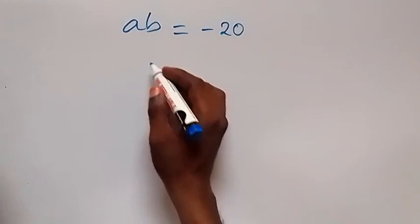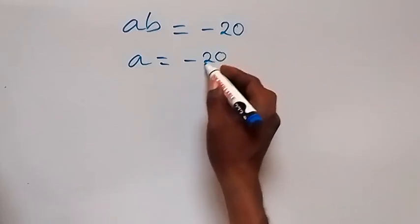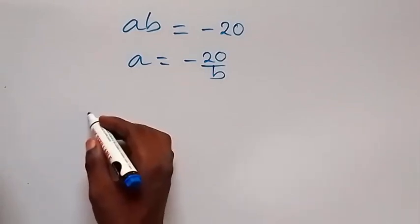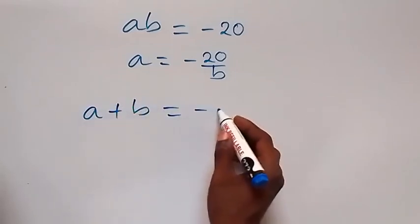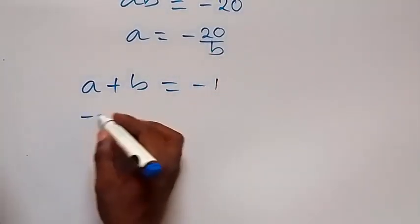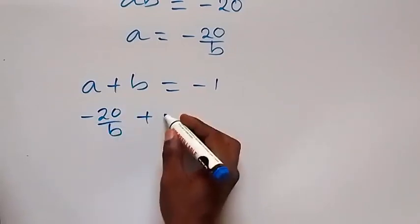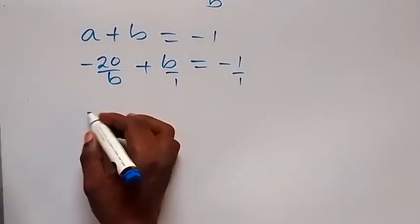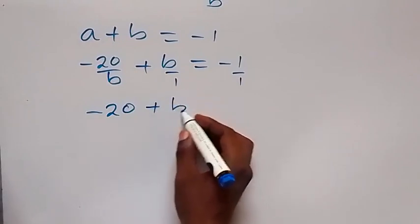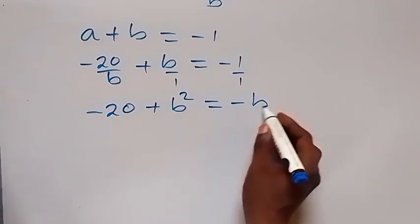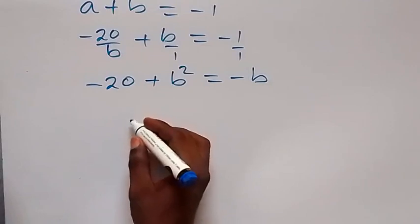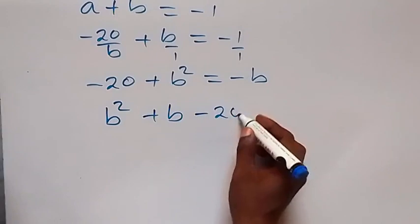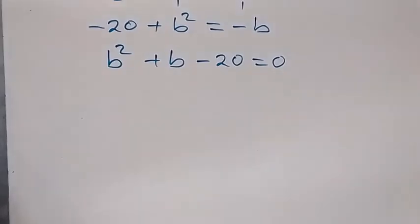We can make a the subject: divide both sides by b, so a equals minus 20 over b. Now substitute this into equation 3, which is a plus b equals minus 1. We get minus 20 over b plus b equals minus 1. Multiplying through by b gives minus 20 plus b squared equals minus b, and rearranging we get b squared plus b minus 20 equals zero.